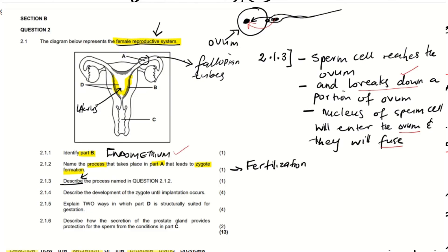I think those points are enough to get you the one mark, although this may seem like too many points — we're just describing fertilization and it could be worth three marks. The sperm cell reaches the ovum, it breaks down a portion and penetrates the ovum, then the nucleus of the sperm cell enters the ovum and fuses with the nucleus of the ovum. Whenever you're writing life sciences, you never know exactly what they mark, so say as much as you can to earn the marks.